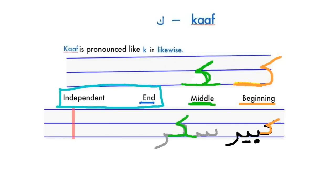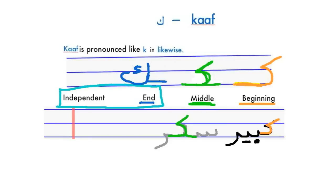At the end in its connected form, it is written completely different — watch how I write it. Notice that I write the letter Hamza in the middle. An example would be the word 'Shakk,' which means doubt. At the end in independent form, we write it like this. An example would be the word 'Dokk.'